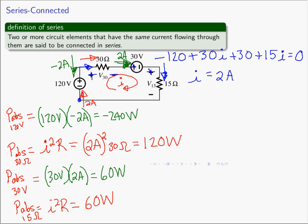One thing you can do to check: resistors are passive so they must absorb power. The 30 volt voltage source is also absorbing power. So where is all that power coming from? It has to come from the 120 volt source. If you add up all the powers absorbed, the answer equals zero — which makes sense because the power each element absorbs has to come from somewhere.